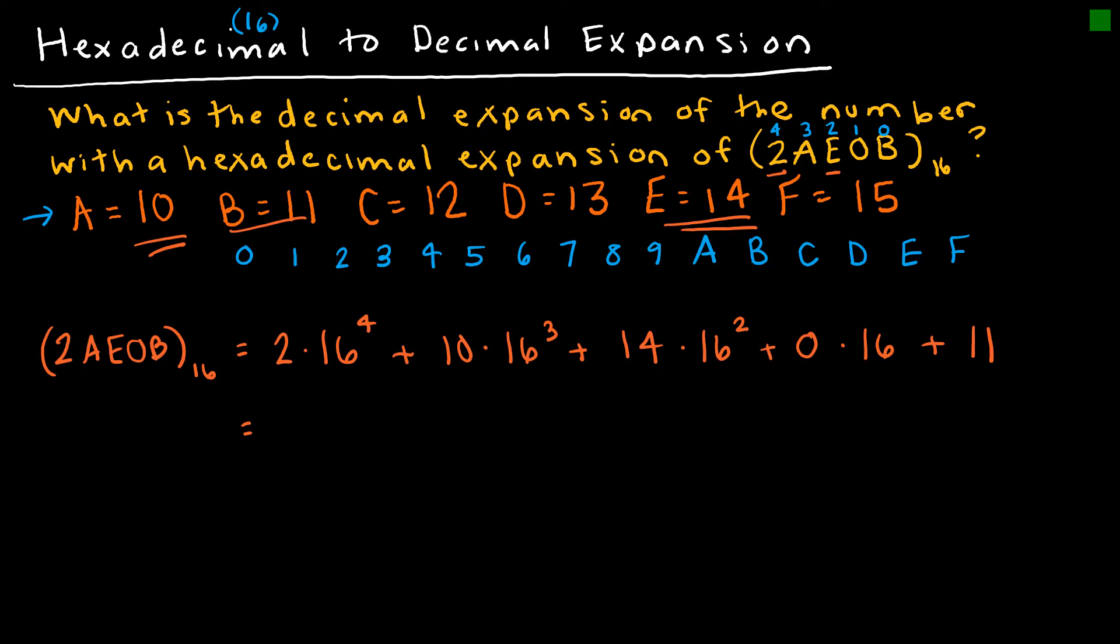I can use my calculator to calculate all of these separate values, and then at the end add them all up to find my final solution. Obviously I've done this ahead of time, so I know all of the values. And when I add up all of these values, I get 175,627. I could write that base 10 just to be clear that it's base 10, but it's not wrong if I don't put the base 10 because that's how we generally do things with base 10 numbers.